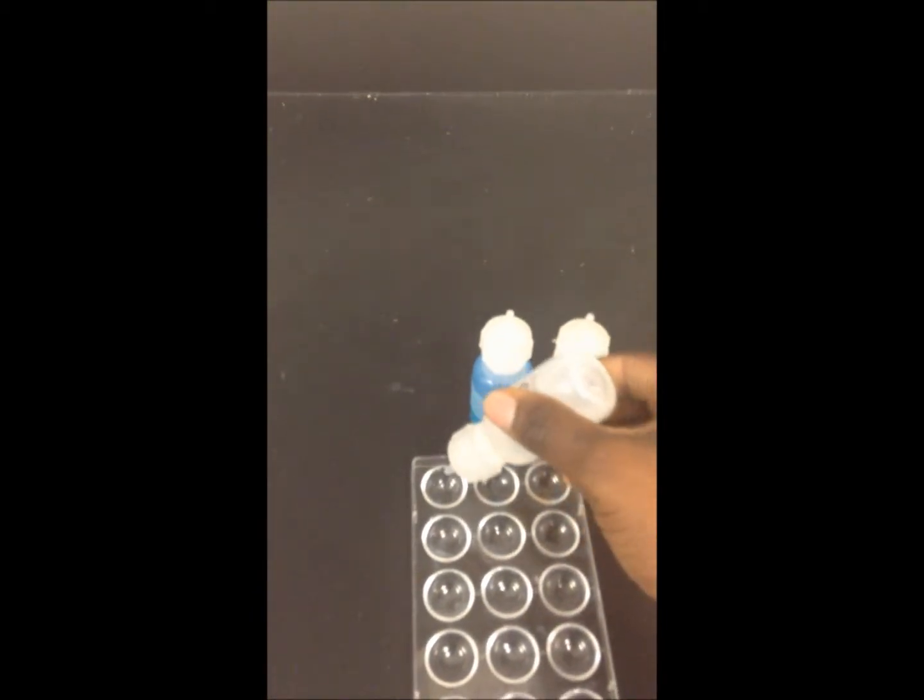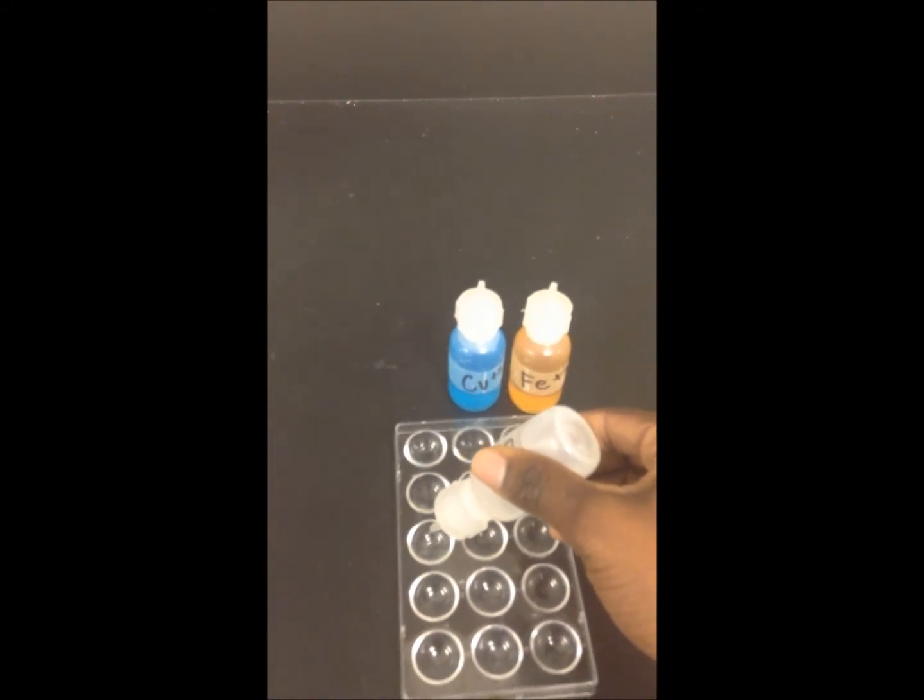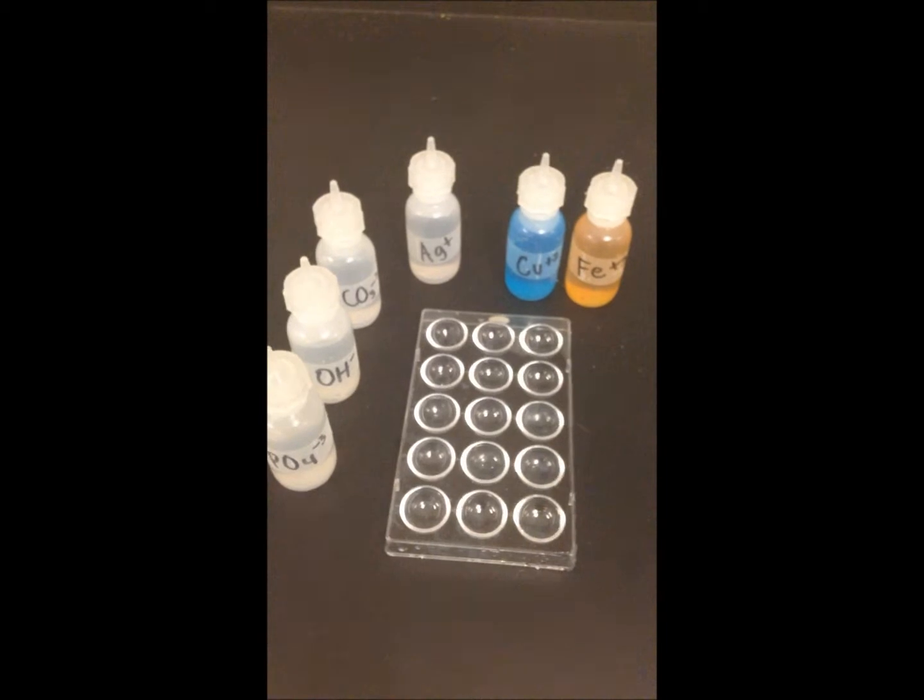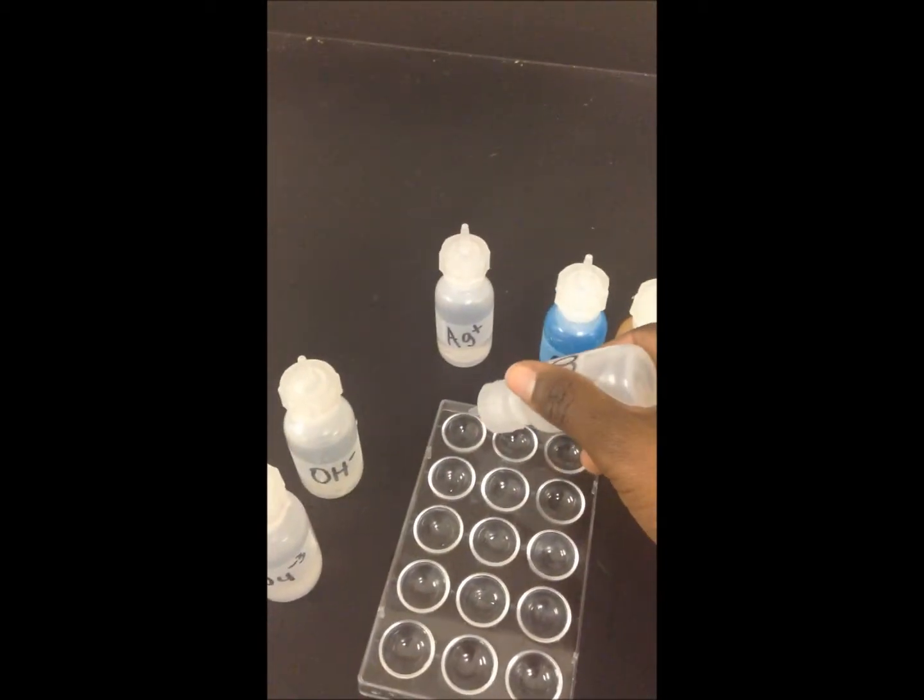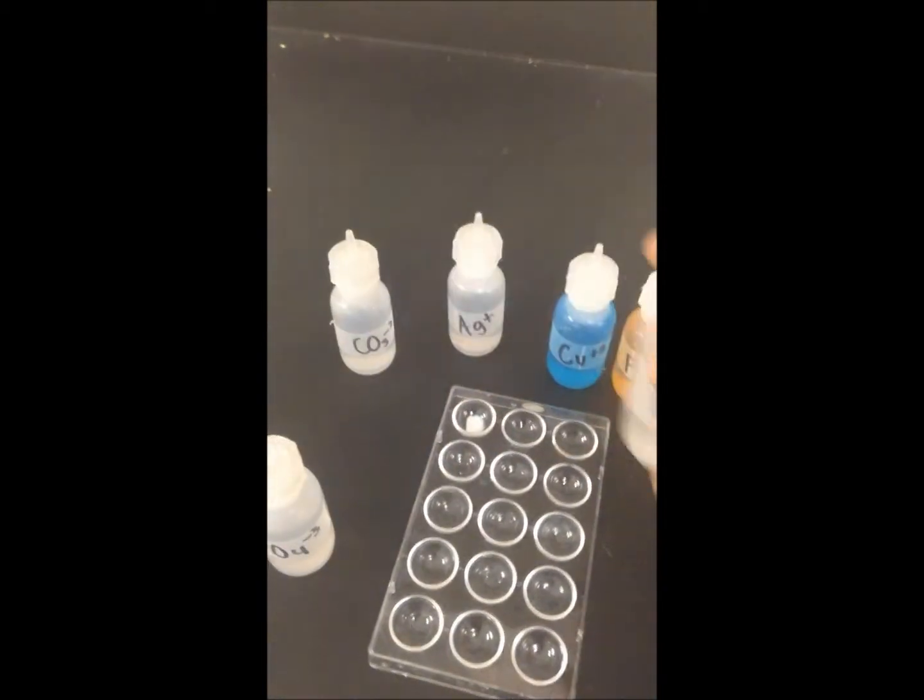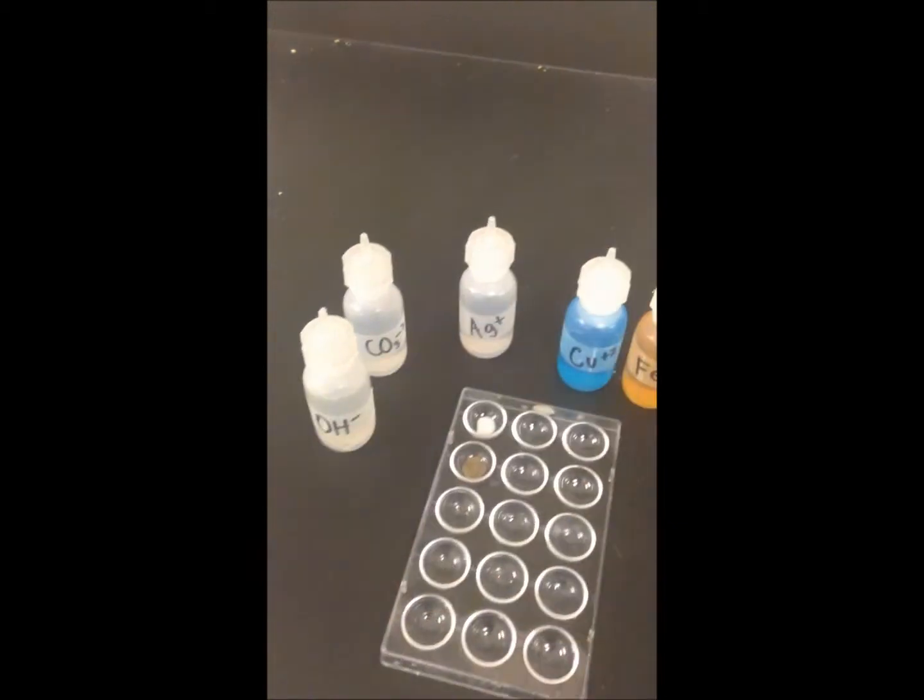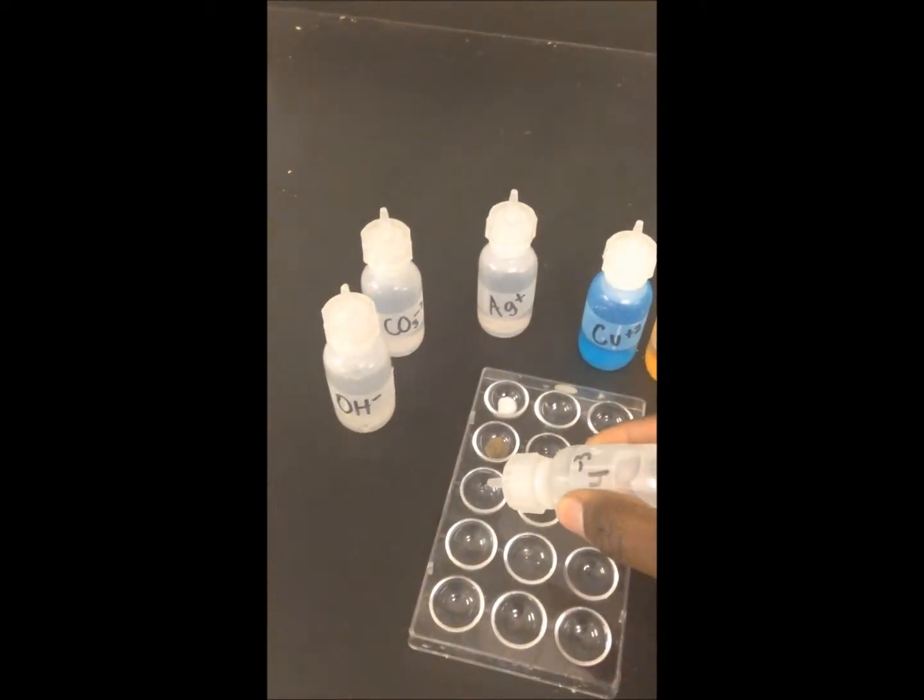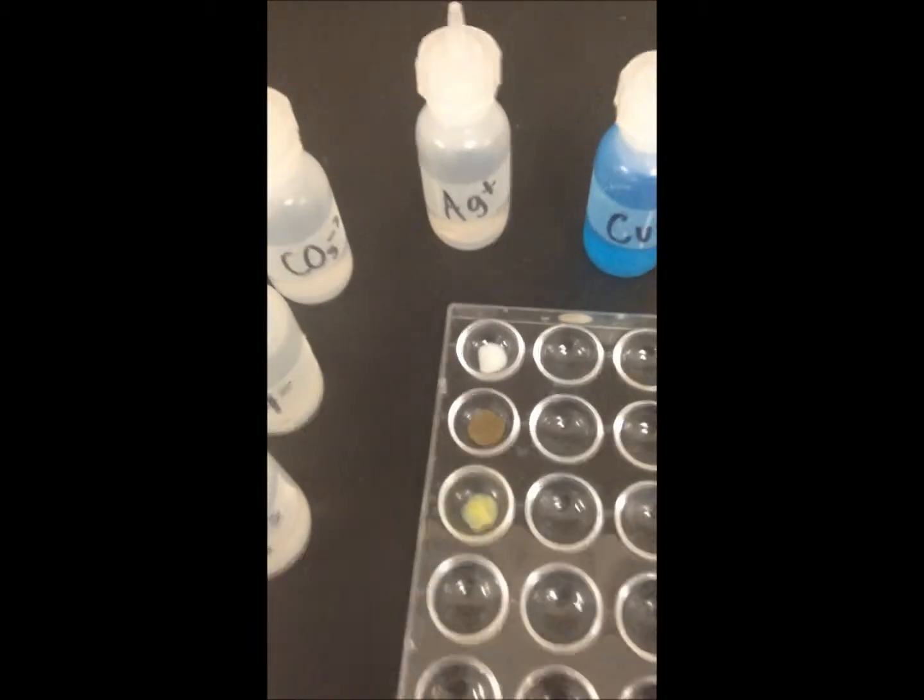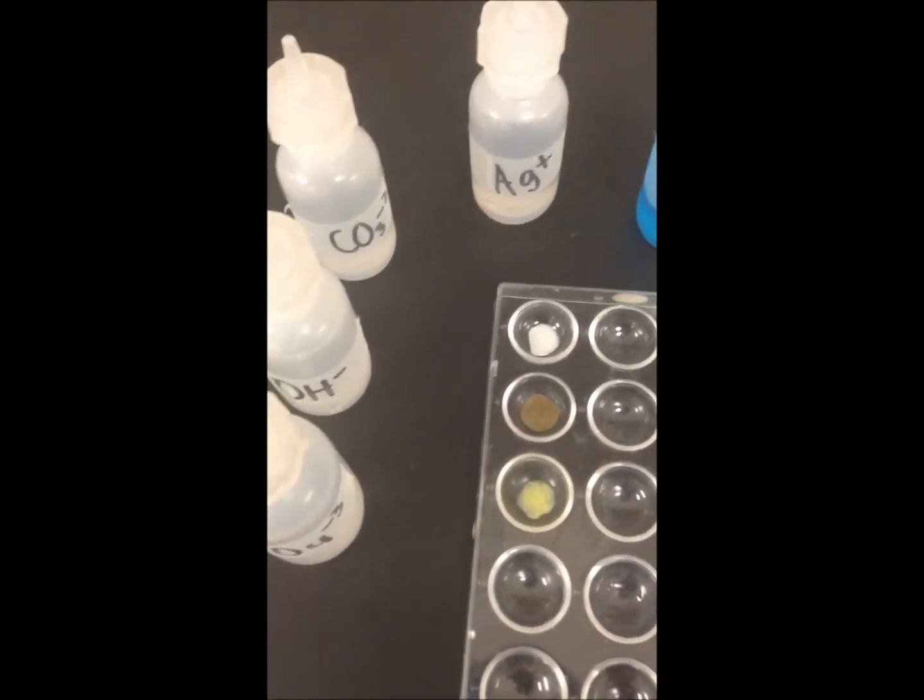We will put some silver plus one in every well, in all three wells, and now you can see each of the cations. We will put in carbonate in the first well, hydroxide in the second, and phosphate in the third. You can observe the color that you see.